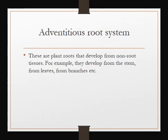Adventitious roots are plant roots that develop from non-root tissues — for example, from the stem, from leaves, from branches. They have no connection with the radicle because they can develop from leaves, stems, nodes, anywhere. They don't have a root origin, but since at the end of the day they fix the plant in the soil, we end up calling them roots.